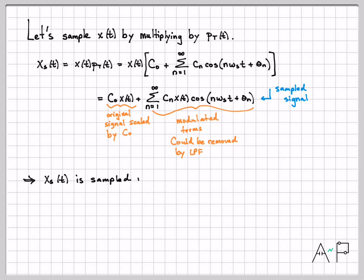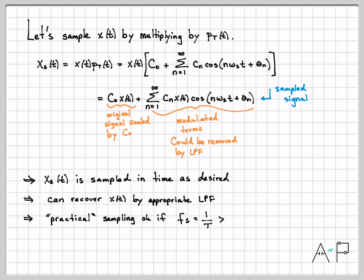In conclusion, x_s(t) is the sampled signal that we desire. It's been sampled in time, discretized in time. We can recover x(t) by using some appropriate low pass filter. So what I call practical sampling will work out as long as my sampling interval still satisfies Nyquist. We'll get into that in the next video.